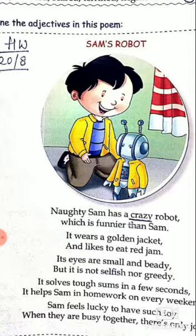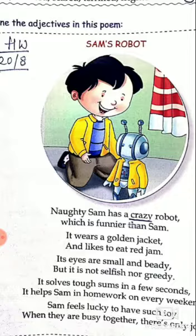You can now underline all the adjectives in this poem. And in the end, rhyming words — circle them and make a pair. In this poem, look for the rhyming pair of words and circle them.